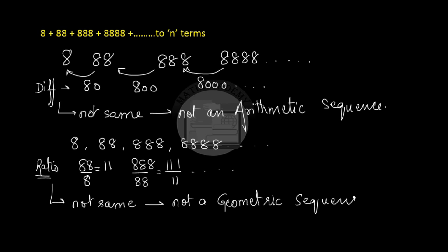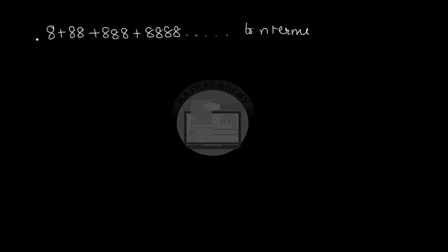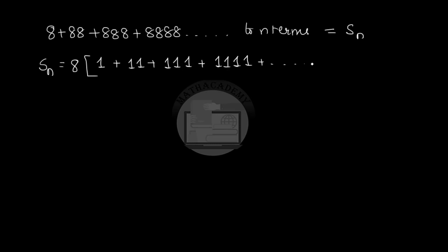How do we find the sum of n terms of this series, since we cannot apply the direct formula for the sum of n terms of an arithmetic or geometric sequence? So let us define Sn = 8 + 88 + 888 + ... to n terms. The first step is to take out 8 as a common factor. When we take out 8, we get 8 times (1 + 11 + 111 + ... to n terms).